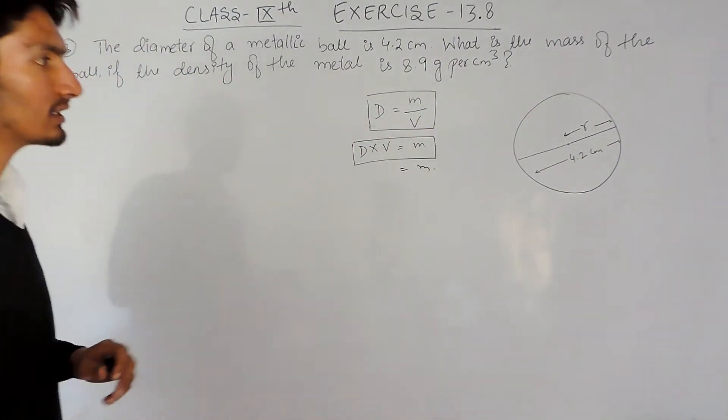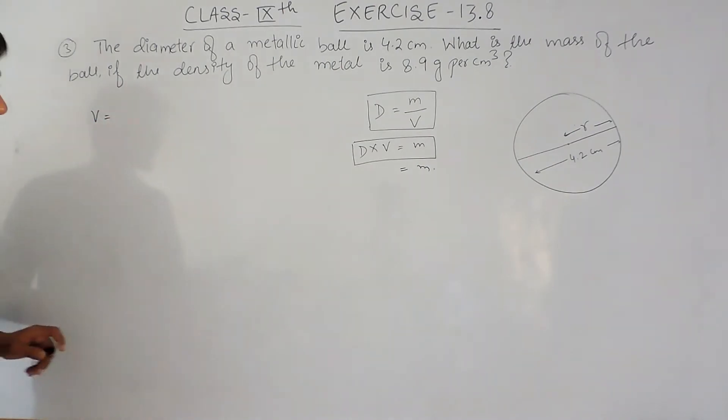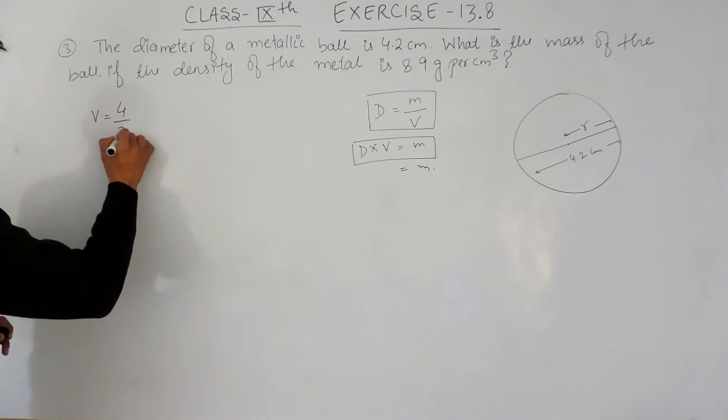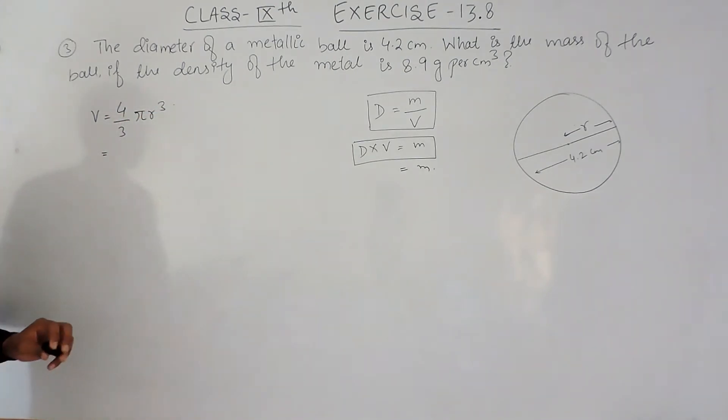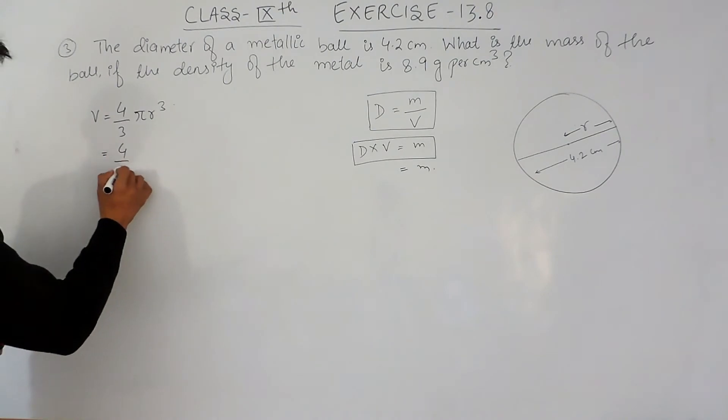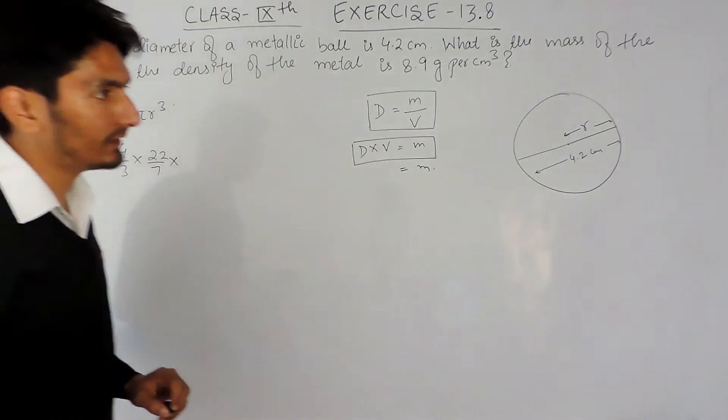So the volume will be - again this is a metallic ball means a sphere - so it should be 4 upon 3 pi r cube. So 4 upon 3 remains as it is, the value of pi is 22 upon 7. Here the diameter is 4.2 centimeters.